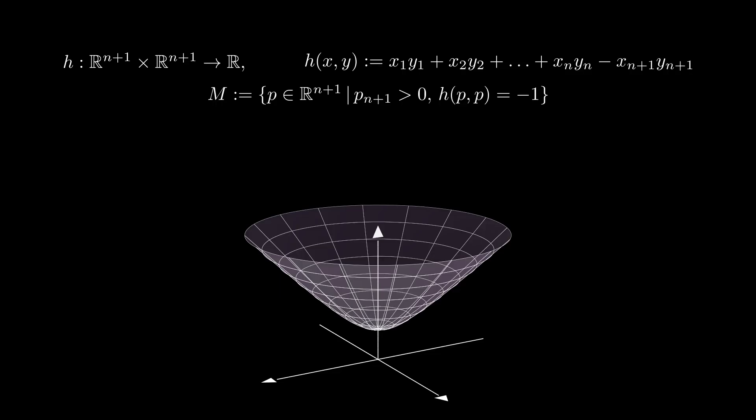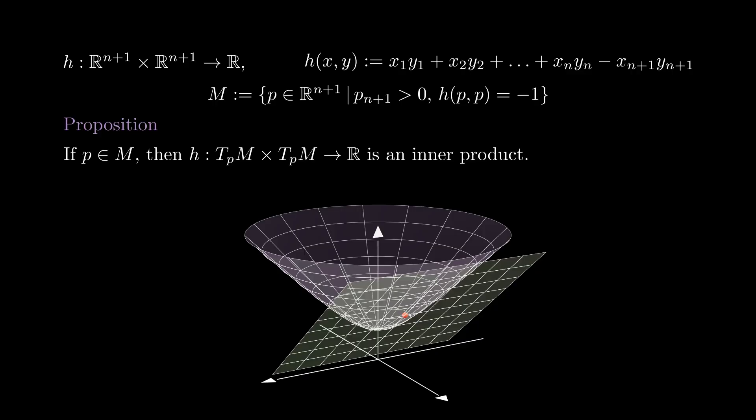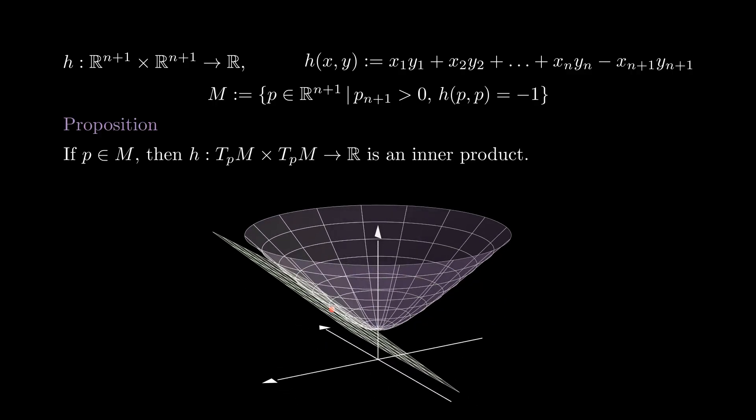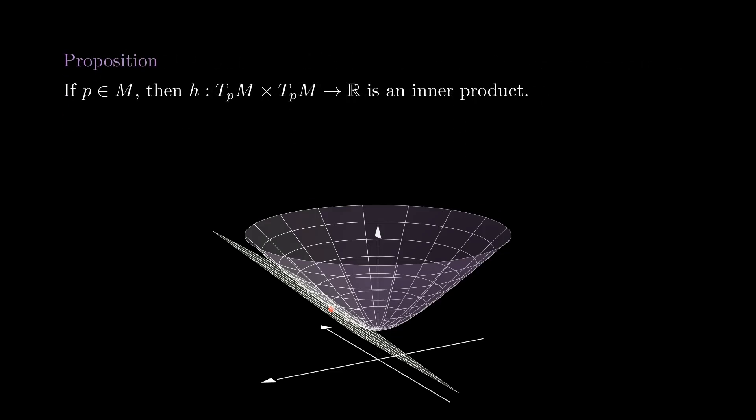We are going to use h to give M a Riemannian metric. It turns out that for each p, h restricted to the tangent space at p is an inner product. h already satisfies almost all the properties of an inner product. We just need to check that it is positive definite when we restrict it to T_p M. To see that, note that if we have a curve in M, then h is constant,